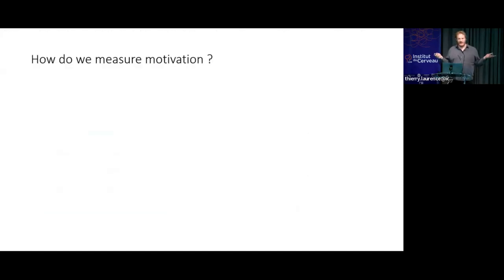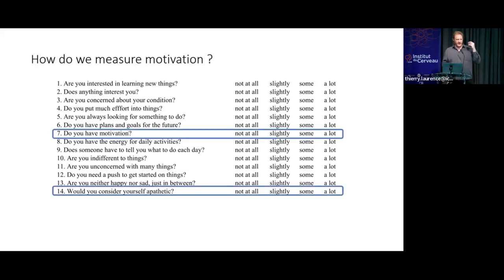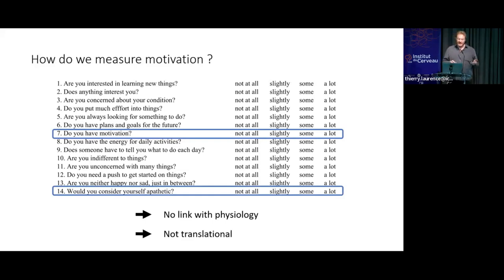So if it's so important, I guess we should have a clever and fancy tool to measure motivation. The kind of thing we use currently is this type of questionnaire — the Starkstein one — which are useful. As you can see, it's very clever: if you want to know if someone is motivated, you ask them 'do you have motivation?' And if you want to know if they're apathetic, you ask 'would you consider yourself as apathetic?' I'm joking, but it does the job from a clinical point of view. The problem is it's quite difficult to link to physiology, and you cannot use it in animal models.